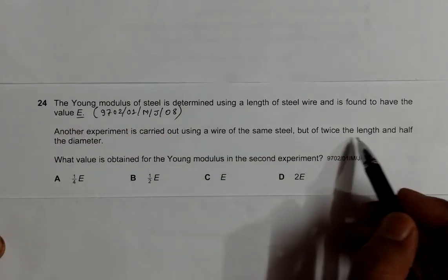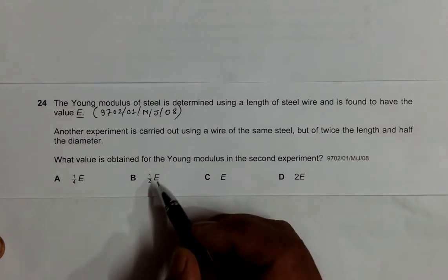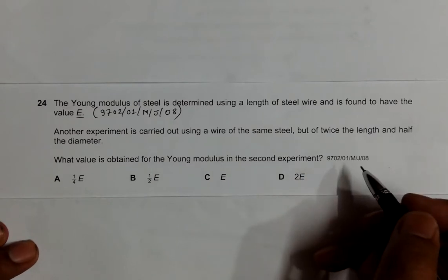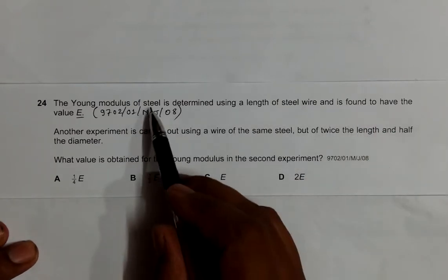of the same steel, but of twice the length and half the diameter. What value is obtained for the Young's modulus in the second experiment? Since the material is the same